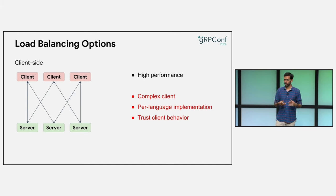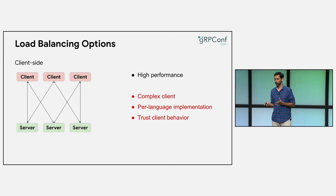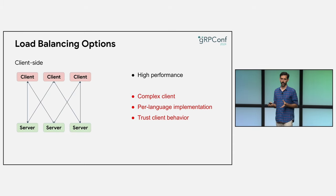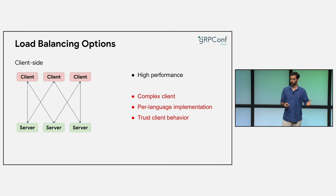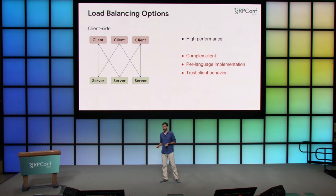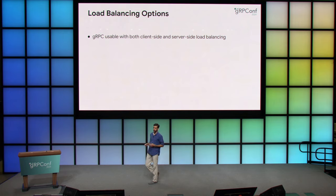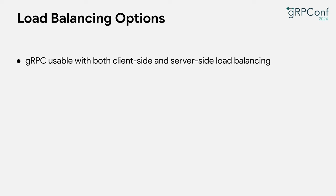Since load balancing is happening in the client, and in most cases you want services accessible to clients written in multiple languages, the same complex client logic needs to be implemented in multiple languages. Also, as a service owner, you need to trust that the client will do the right thing. The good thing is that if you're using gRPC, you get all that for free, because gRPC supports client-side load balancing in multiple languages and you can trust the gRPC clients to do the right thing.